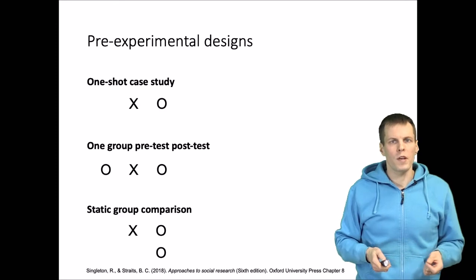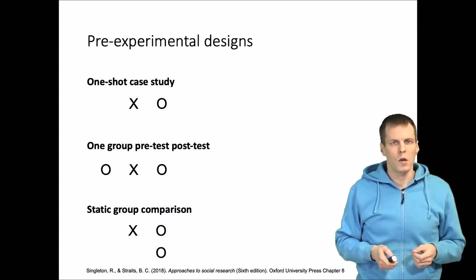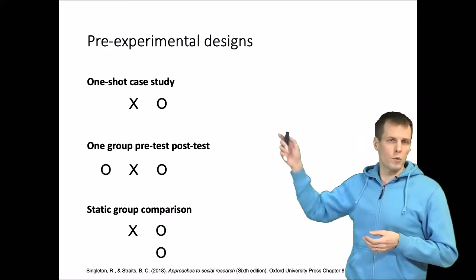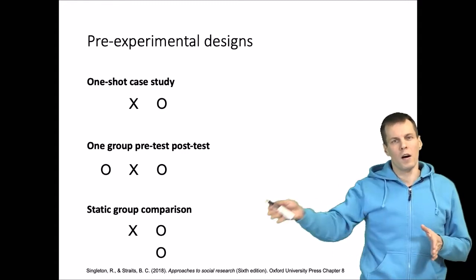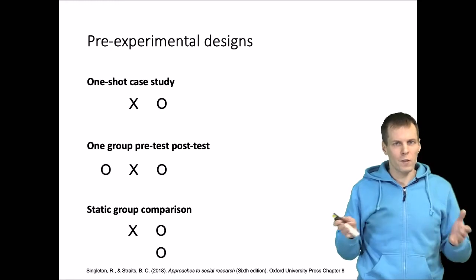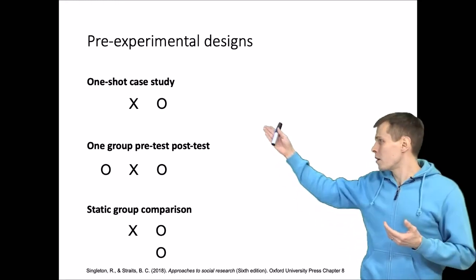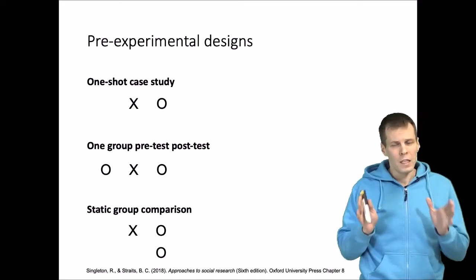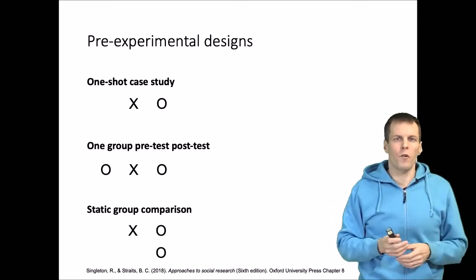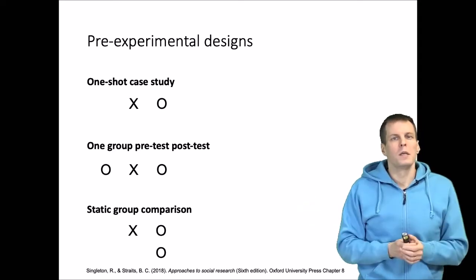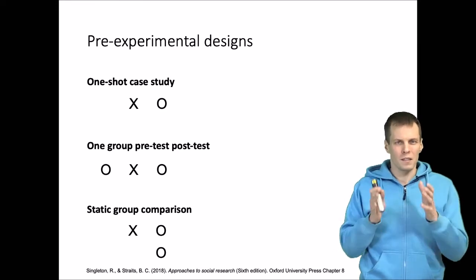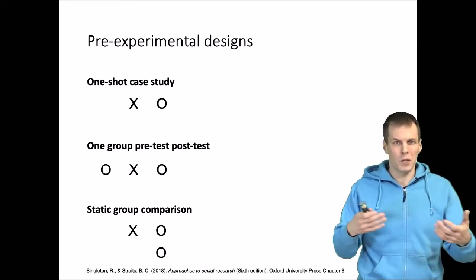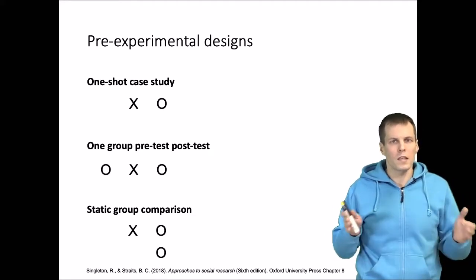Singleton and Straits list three pre-experimental designs. First is the one-shot case study: we do something X, we observe what happens. For example, if I implement a new teaching strategy in my course and then measure student satisfaction afterwards, that would be a one-shot case study. It's problematic because high ratings don't tell us whether the approach worked — it's possible the student group just happened to like the subject of the course and the outcome had nothing to do with the teaching strategy.